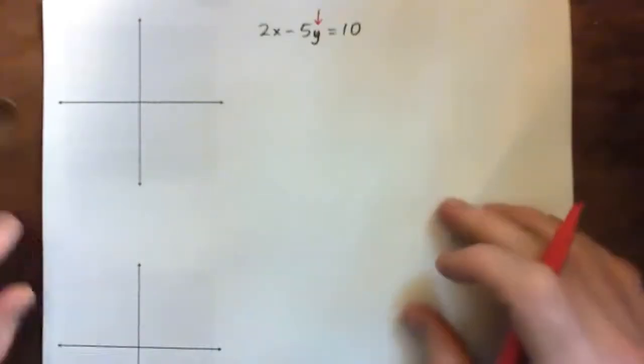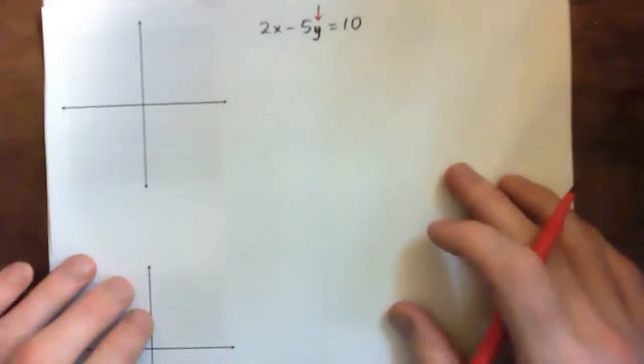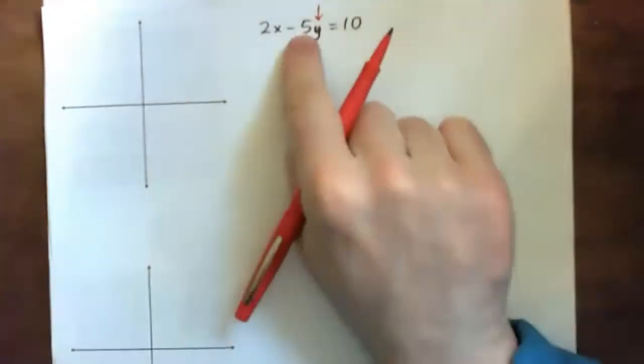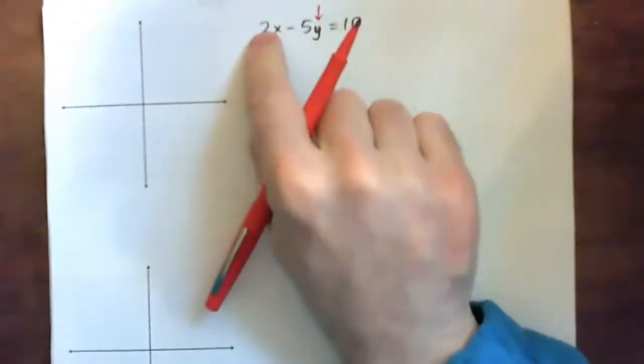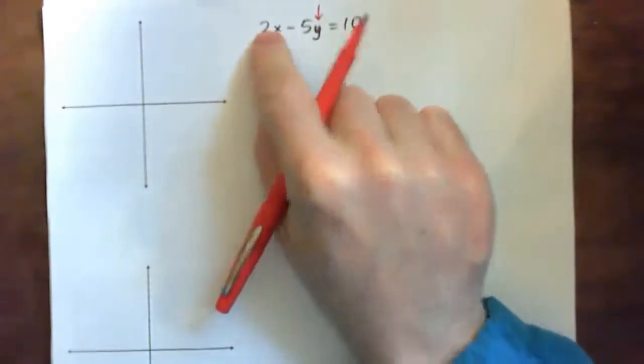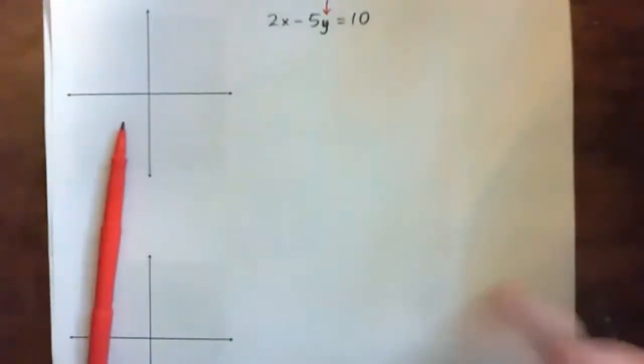So, again we're solving for y. 2x minus 5y equals 10. y has been multiplied by negative 5 and then there's a 2x being added on. We've got to solve for y. We've got to get y equals something, right?